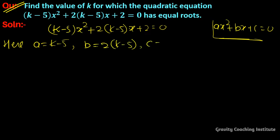According to the question, it has equal roots. For equal roots, the discriminant D equals 0. The formula for D is b² - 4ac = 0.